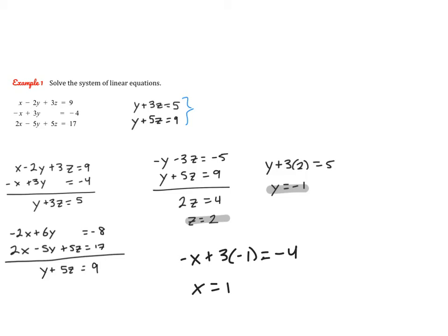And then all you have to do is write your answer as an ordered triple. So 1, negative 1, 2. And we're done.